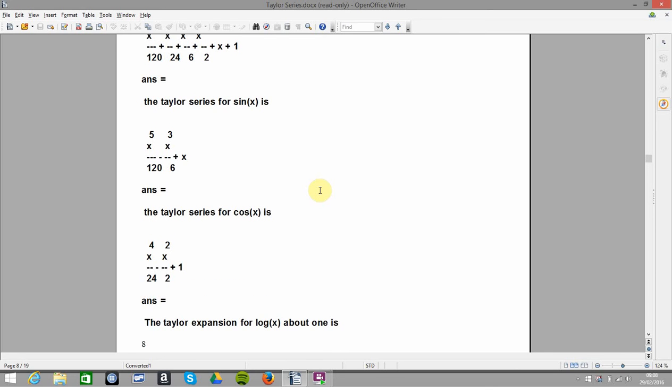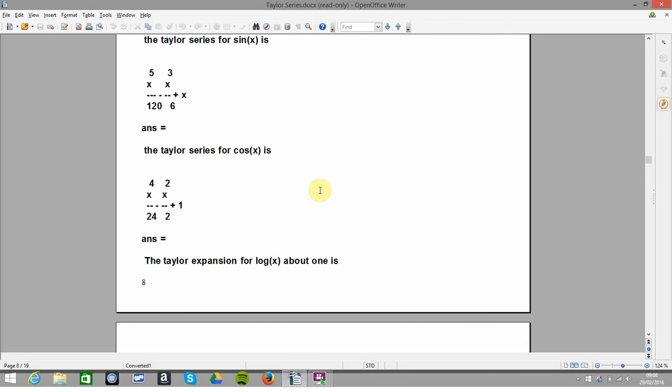Cos(x), that's grand, and then I have at the very bottom here, the Taylor expansion for log x about 1. So how did I say about 1?